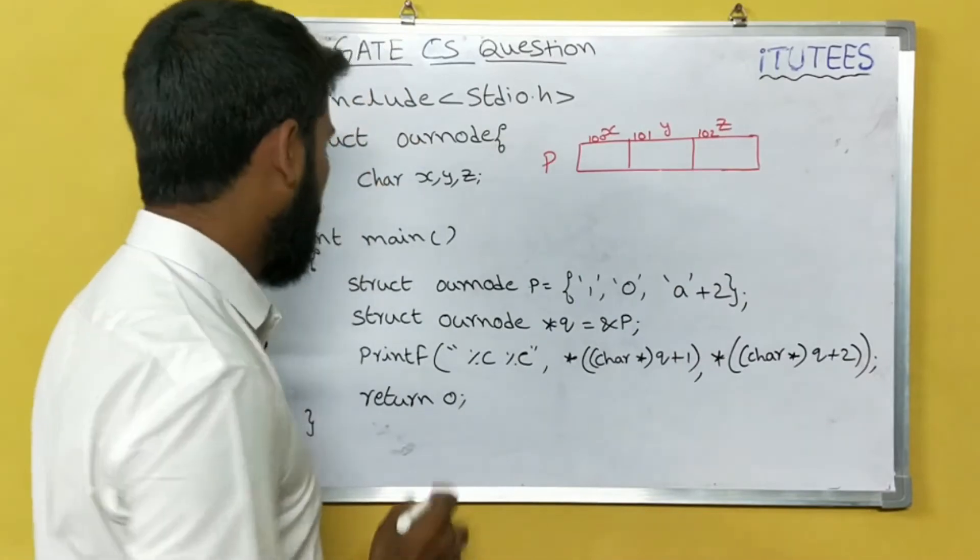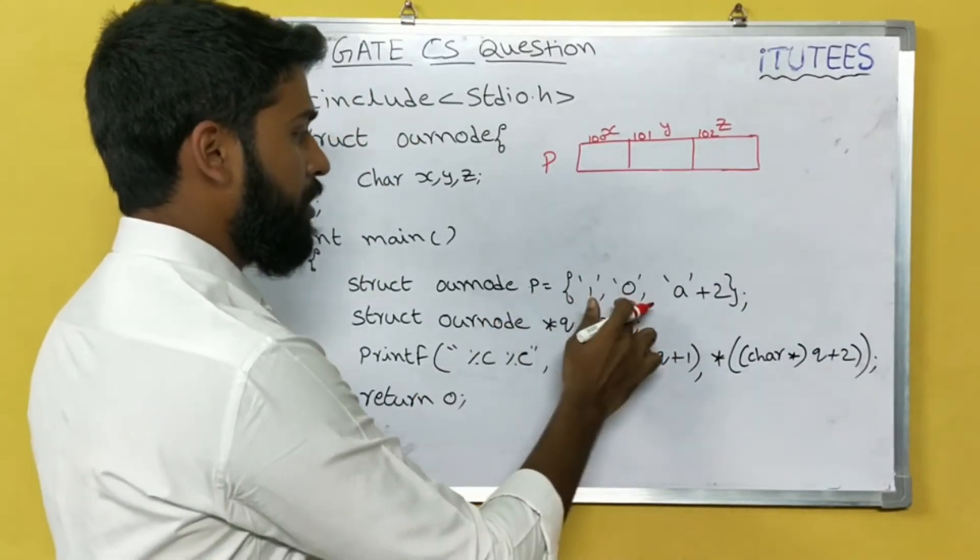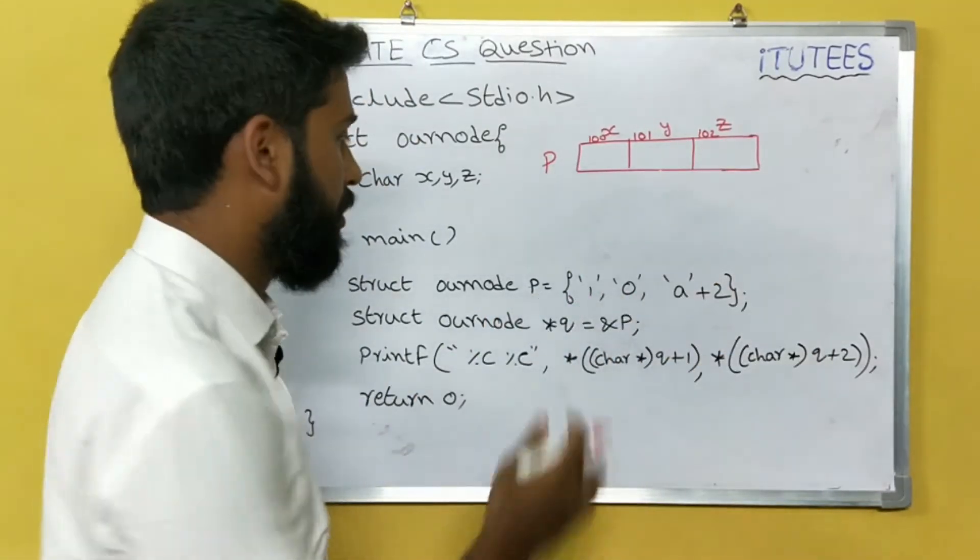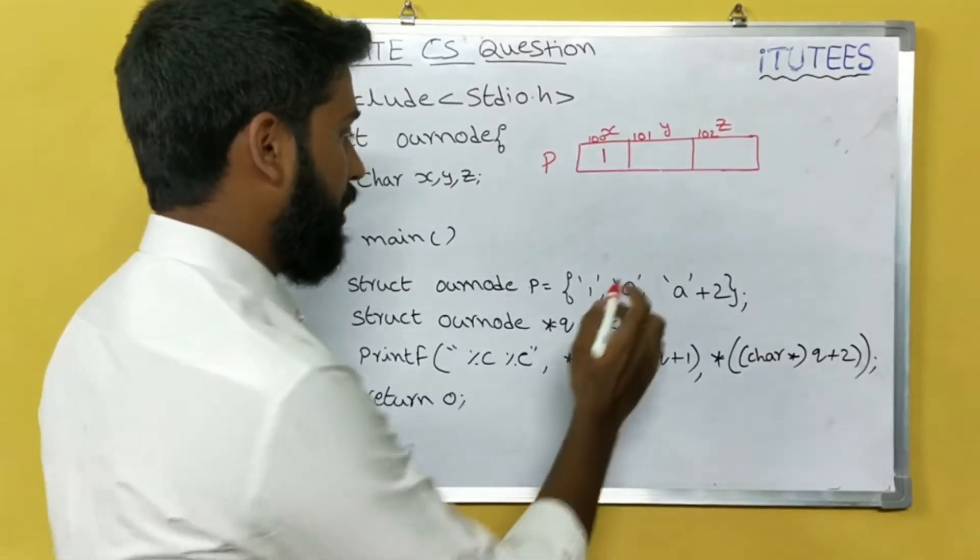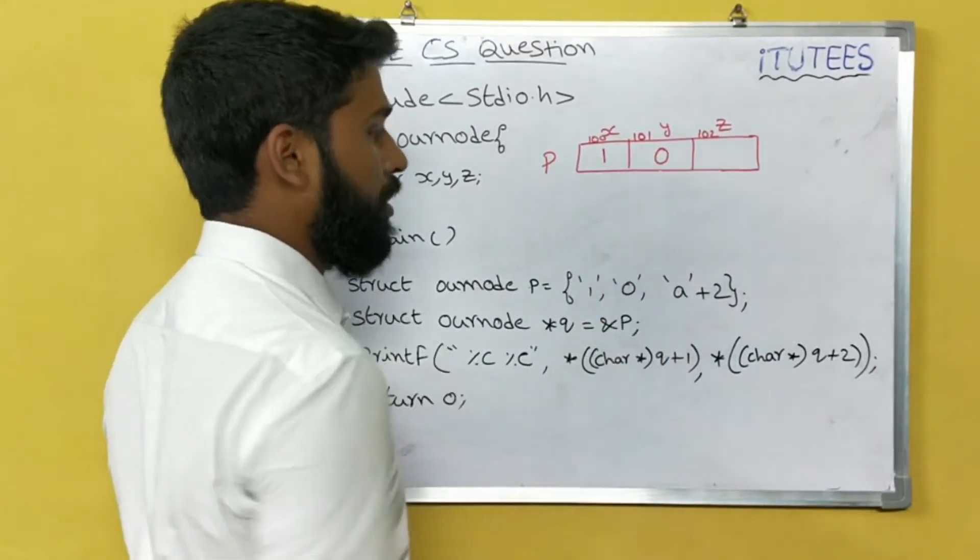So P equals to 1, 0, 'a' plus 2. In first location it stored 1, in second location 0, here.